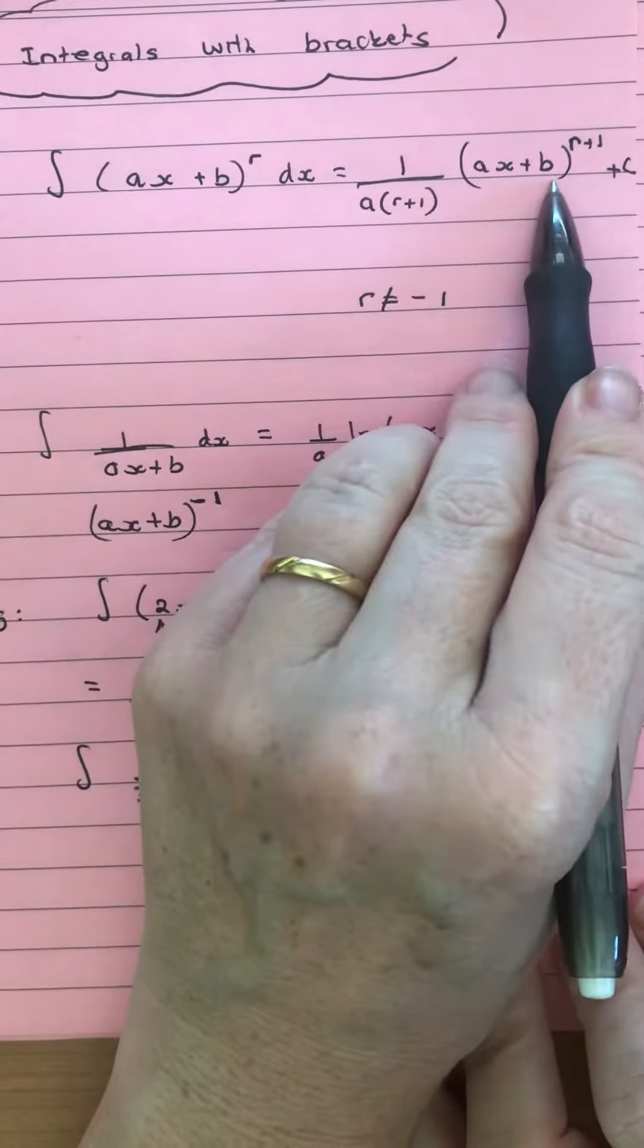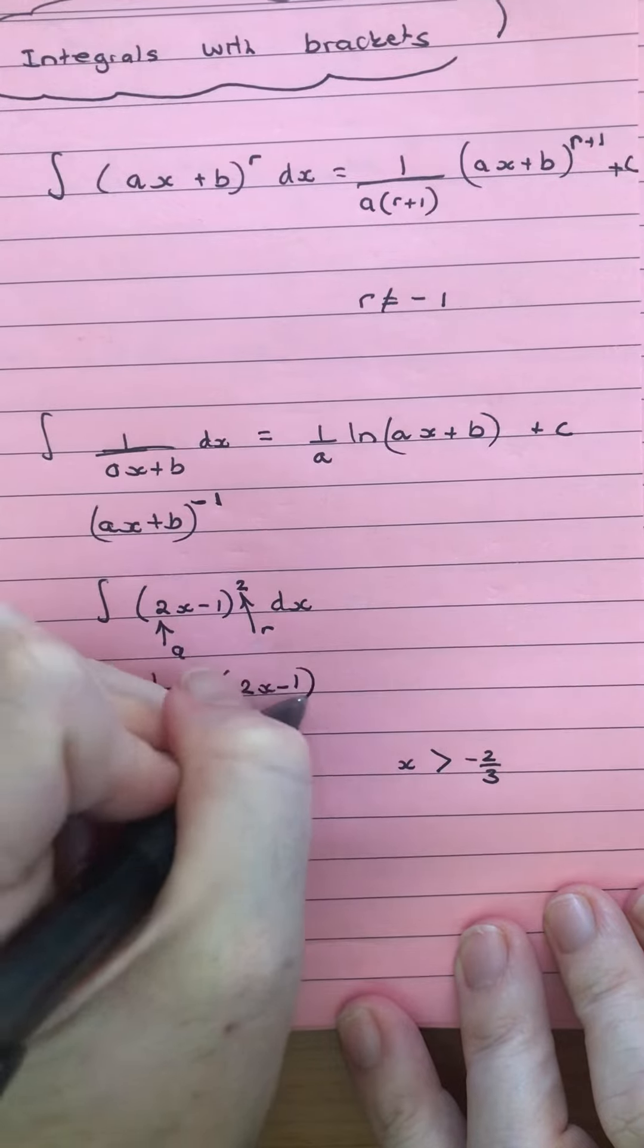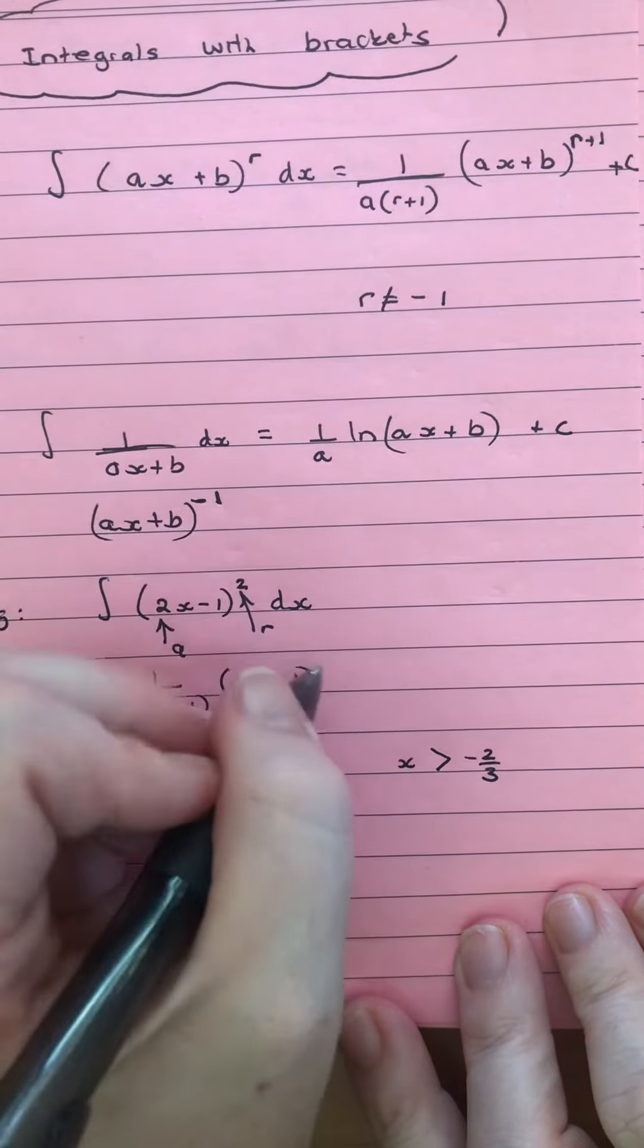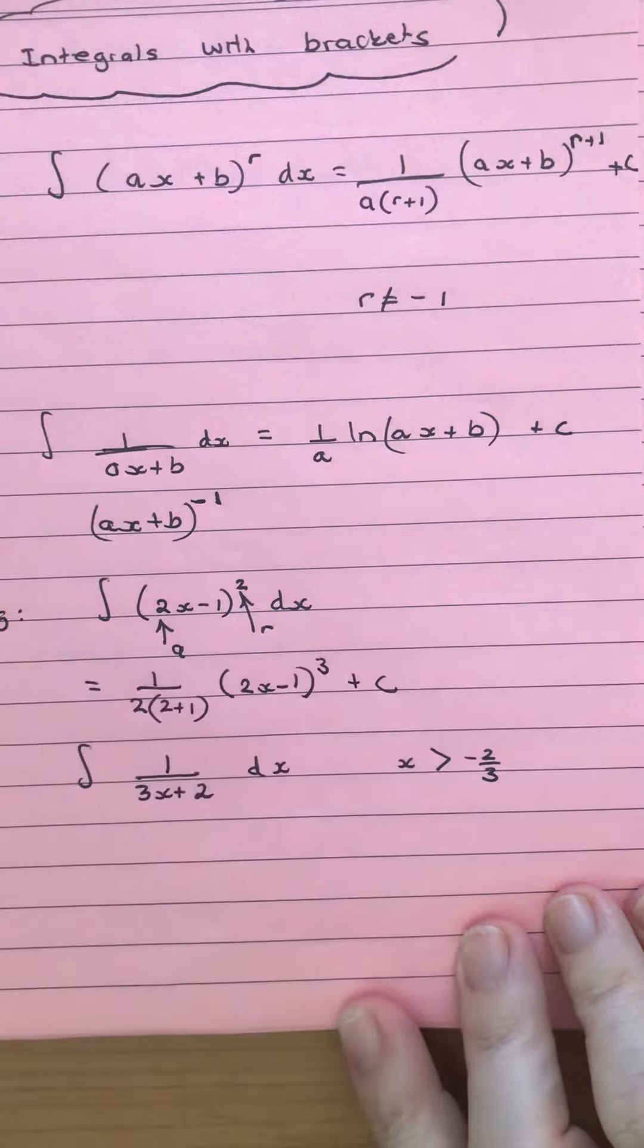We've got ax plus b, so that's the bit that stays the same: 2x minus 1. And then we're going to raise that to a power of 3 and write plus c.